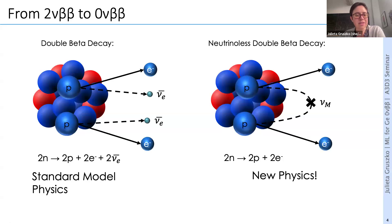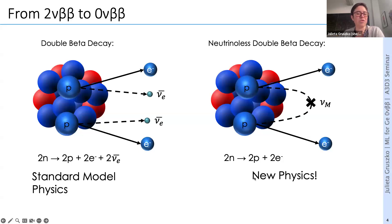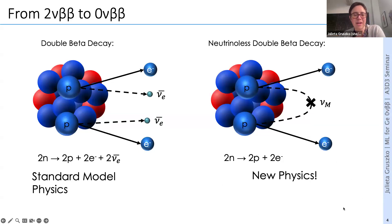What we look for is the neutrino-less version of double-beta decay, where instead of emitting two antineutrinos, you exchange a virtual neutrino between the two nucleons — or you can think of it as the two antineutrinos annihilating with one another. This would be new physics. It can only happen if the neutrino is its own antiparticle — what we call the neutrino being a Majorana particle. In that case you get two protons and two electrons out, but no neutrinos, meaning we've made more matter than antimatter.